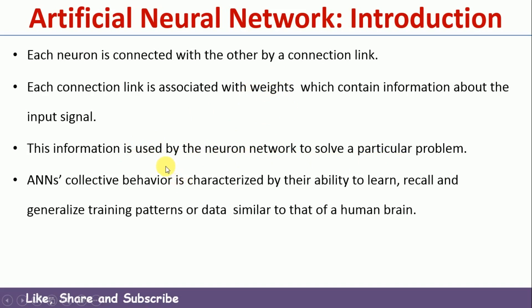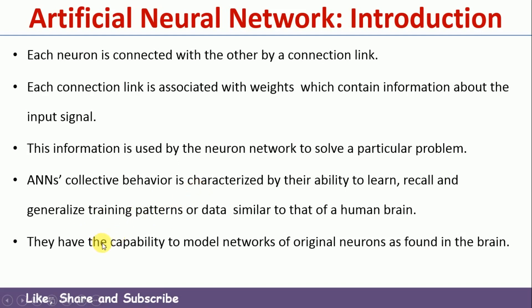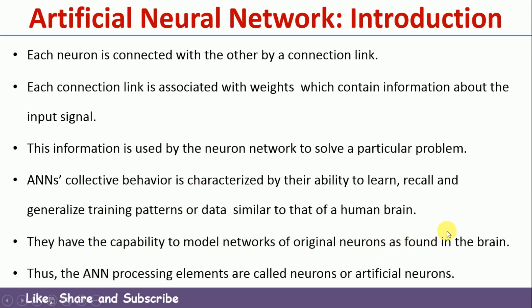The Artificial Neural Network is characterized by its ability to learn, recall, and generalize training patterns or data, similar to the human brain. The Artificial Neural Network learns, recalls, and generalizes training patterns. They have the capability to model networks of original neurons as found in the brain, which is why the processing units of Artificial Neural Networks are called neurons, also known as Artificial Neurons.